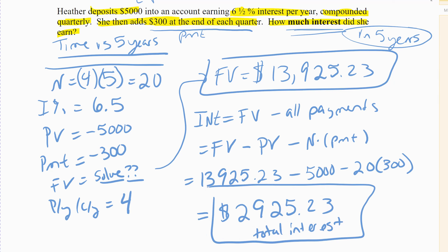So the formula is: $13,925.23 minus $5,000 she put in once, minus 20 times $300. Those were all of her payments - that's why we're subtracting them. What's left over once you do that subtraction is the interest: $2,925.23 in total interest. So out of the $13,000, almost $3,000 of it is interest - the rest was money she put in there, the initial $5,000 plus the $6,000 in payments. Alright, so there's page one of the mixed review, which had a sampling of a lot of different things: a two-amount case, a simple interest case, and a regular compounding case. In the next video I'll do page two of the notes.